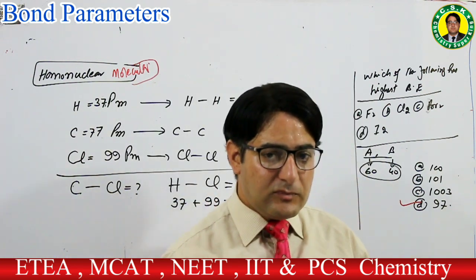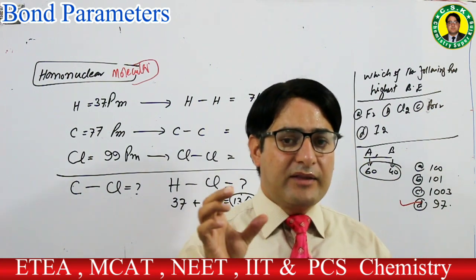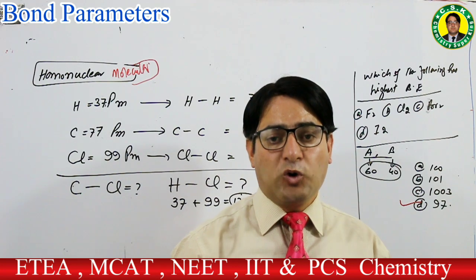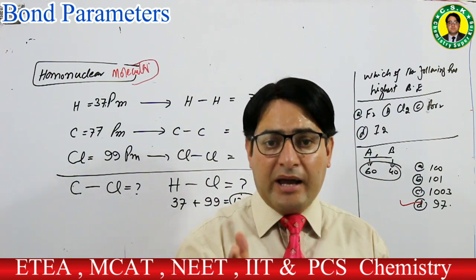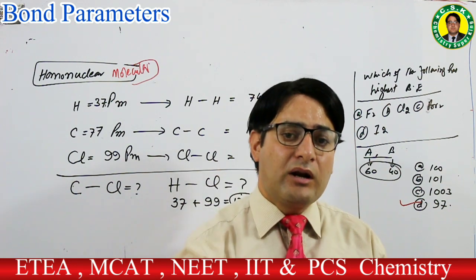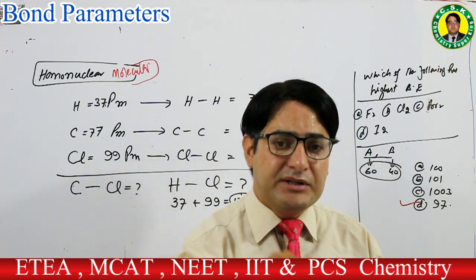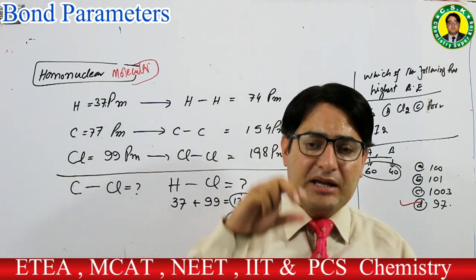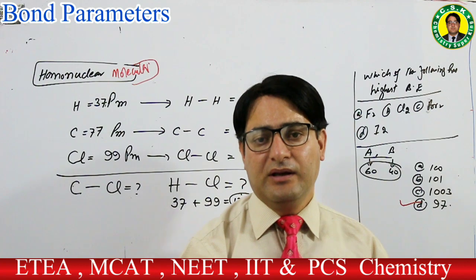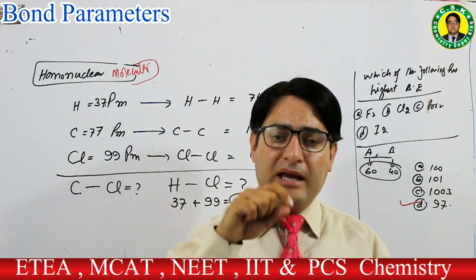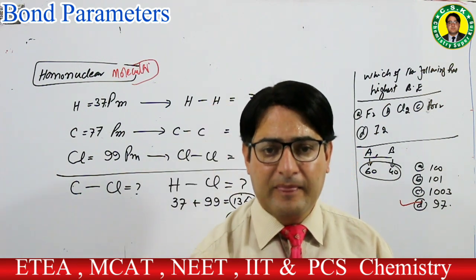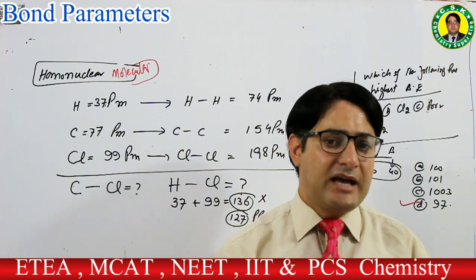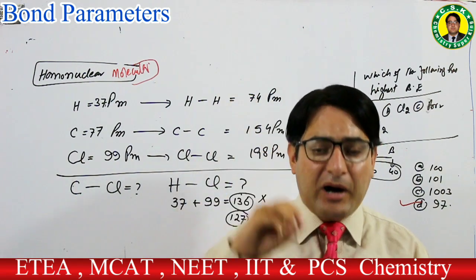یاد رکھنا: جب bond energy کی بات کریں — non-identical atoms کی bond energy individual atoms کی bond energy کے sum سے زیادہ ہوگی۔ Bond length individual atoms کے covalent radii کے sum سے کم، اور bond energy individual atoms کی bond energy کے sum سے زیادہ — یہ important point ہے۔